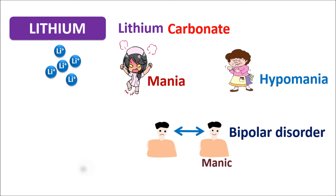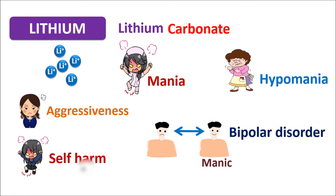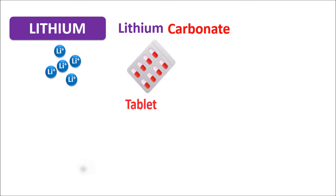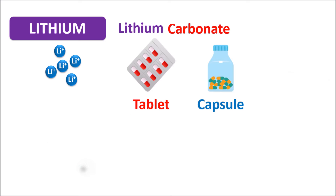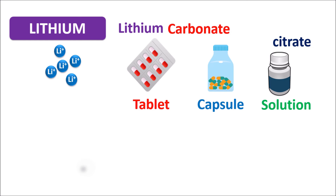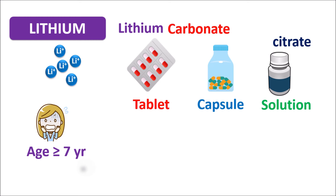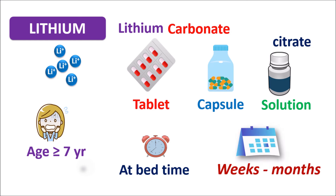With lithium carbonate, aggressiveness in people can be reduced and it can also reduce the induction of self-harm. Lithium is available as tablets, capsules, and as a solution where it is present as lithium citrate. It can be given to both adults and children aged 7 years or older. It is suggested to be taken at bedtime, and treatment requires a very long period — sometimes several weeks to months.